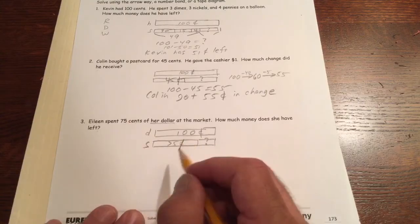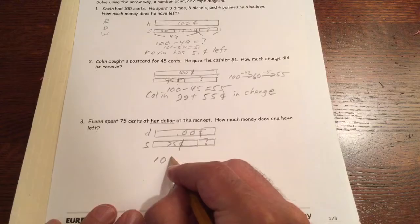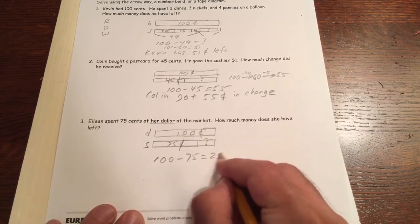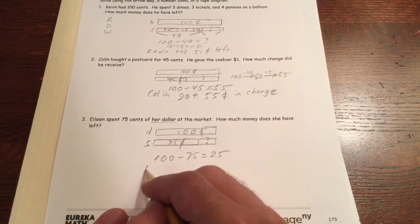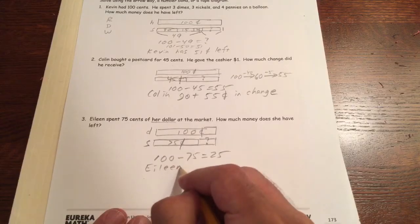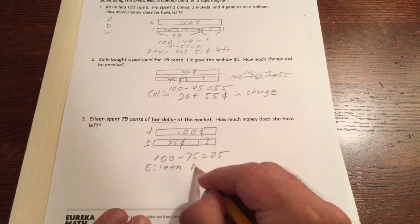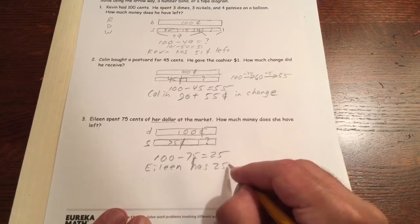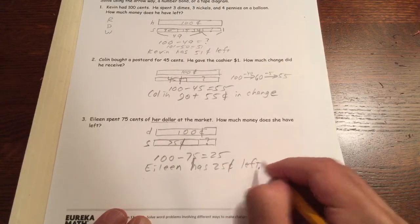You know it takes another 25 cents to make a dollar. You might just say dollar minus 75 equals 25. Eileen has 25 cents left.